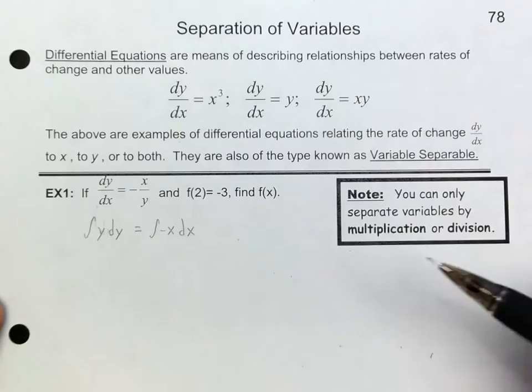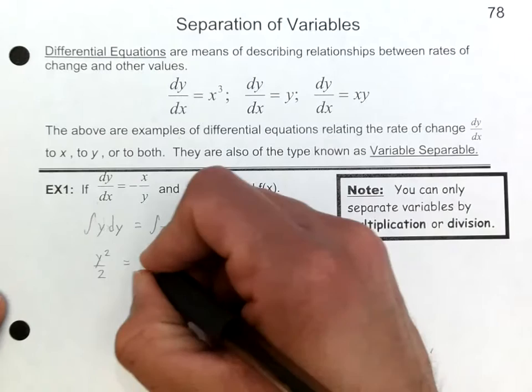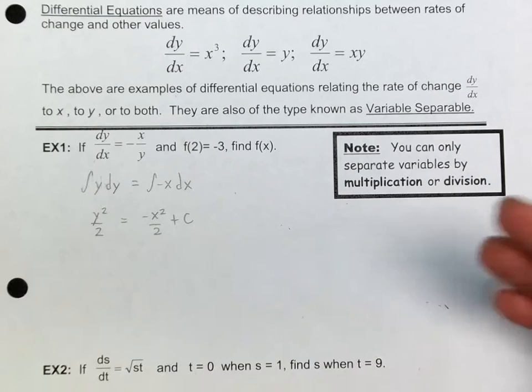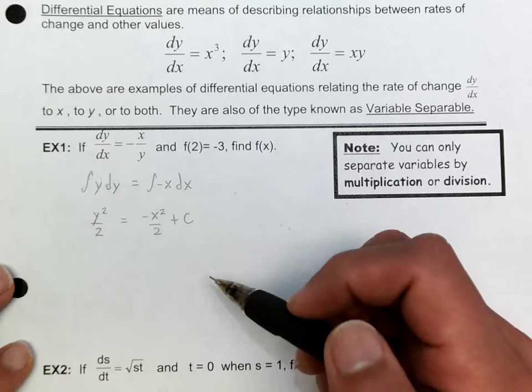The goal here is to find the function f that contains a specific point. If we integrate the left side, we only get y squared over 2. On the right side we get negative x squared over 2 plus c. The next thing we have to do is plug in our point to find the c value — we're going to plug in 2 for x and negative 3 for y.